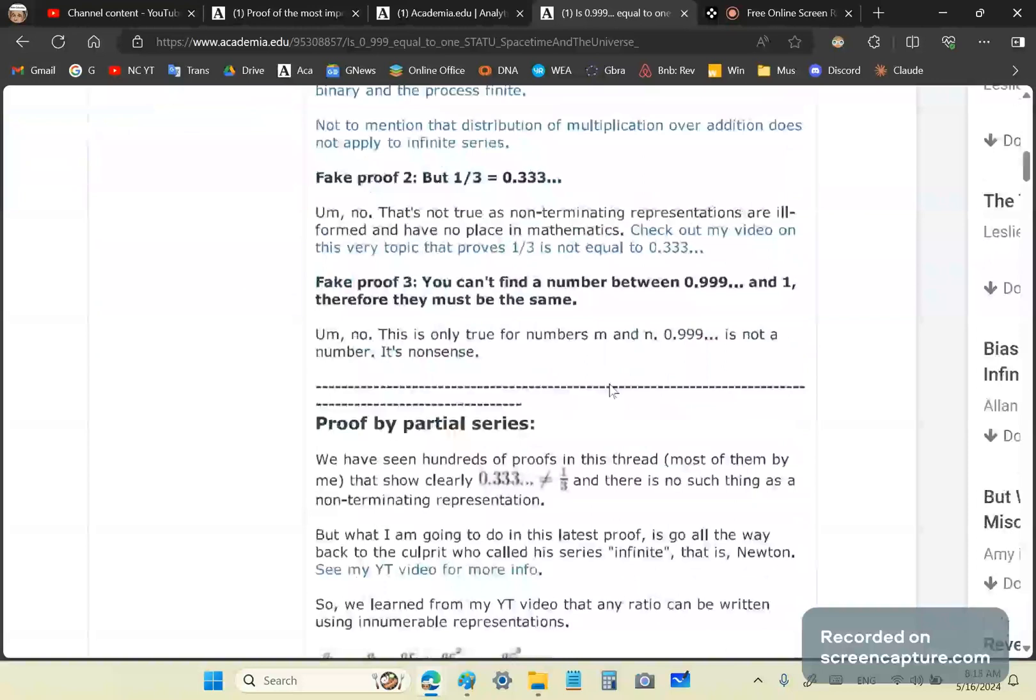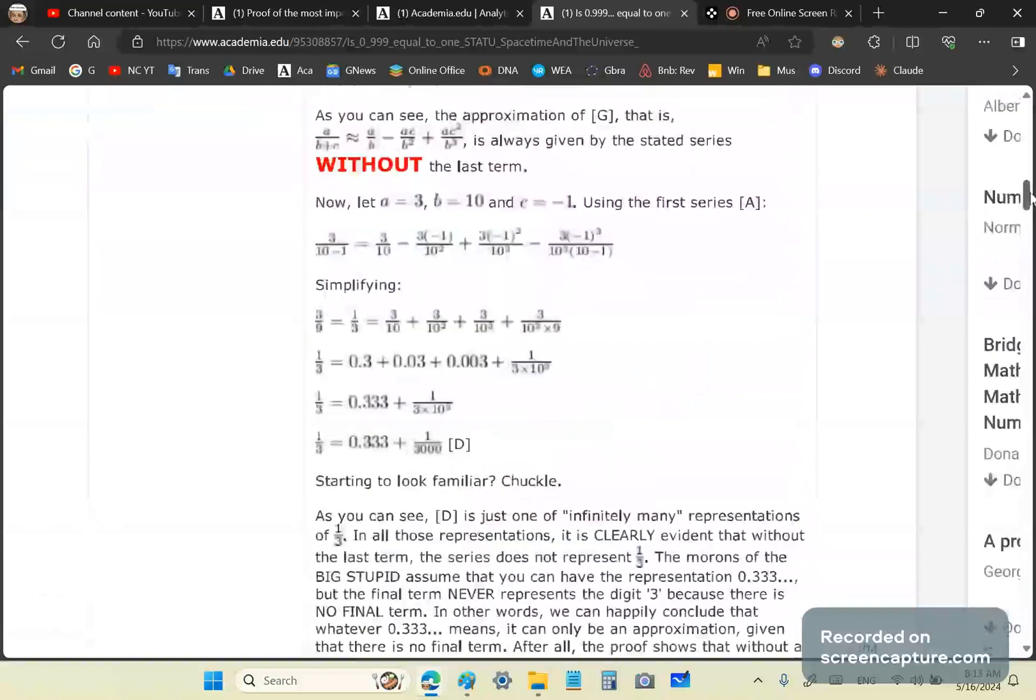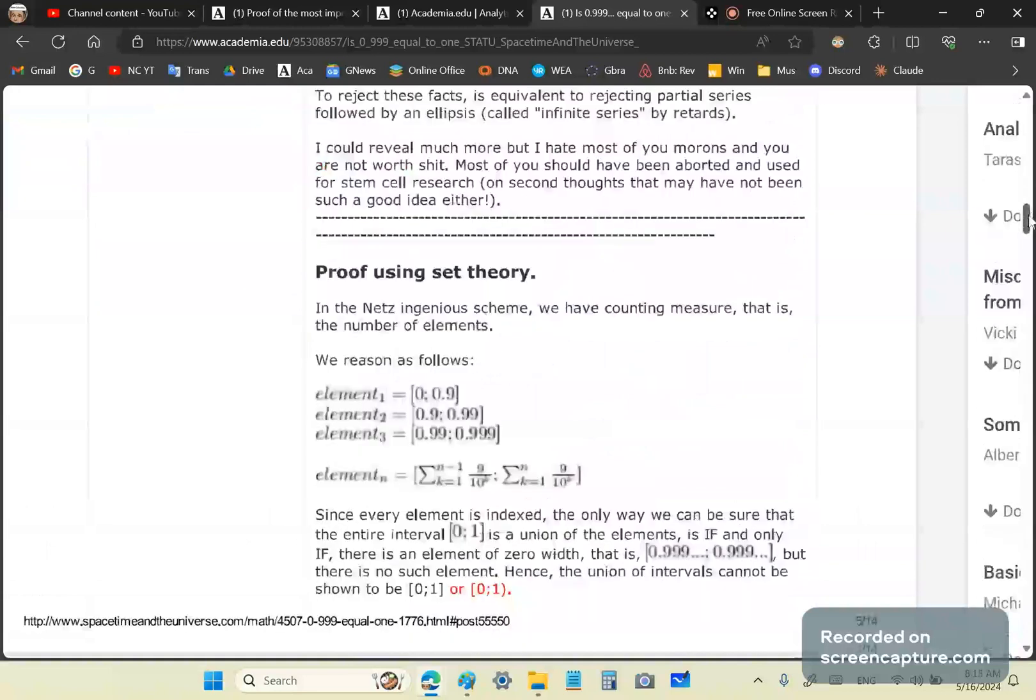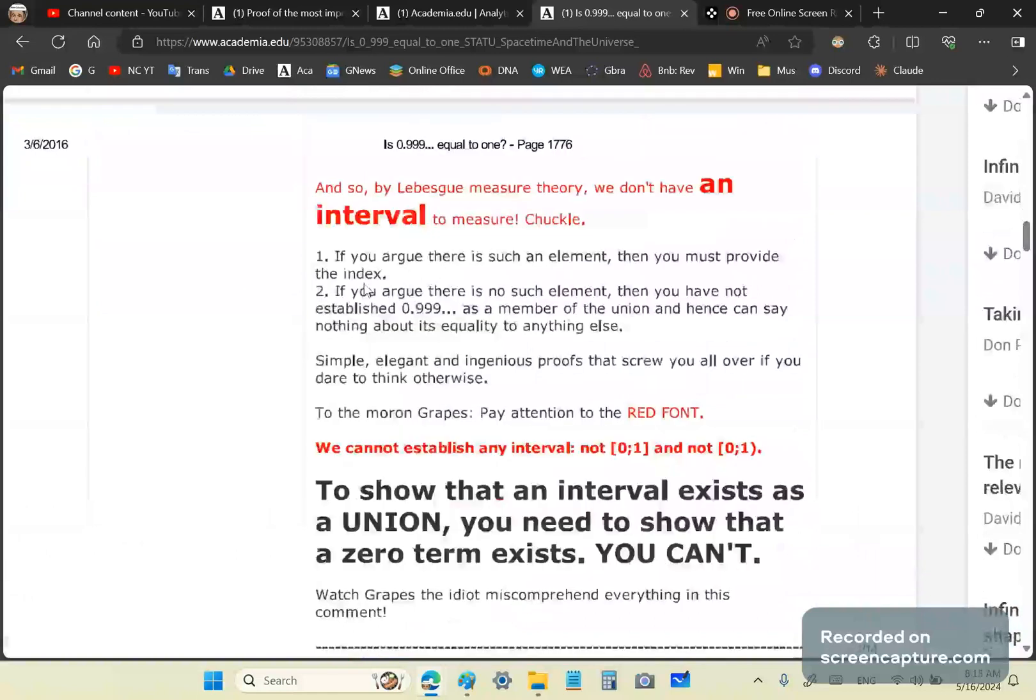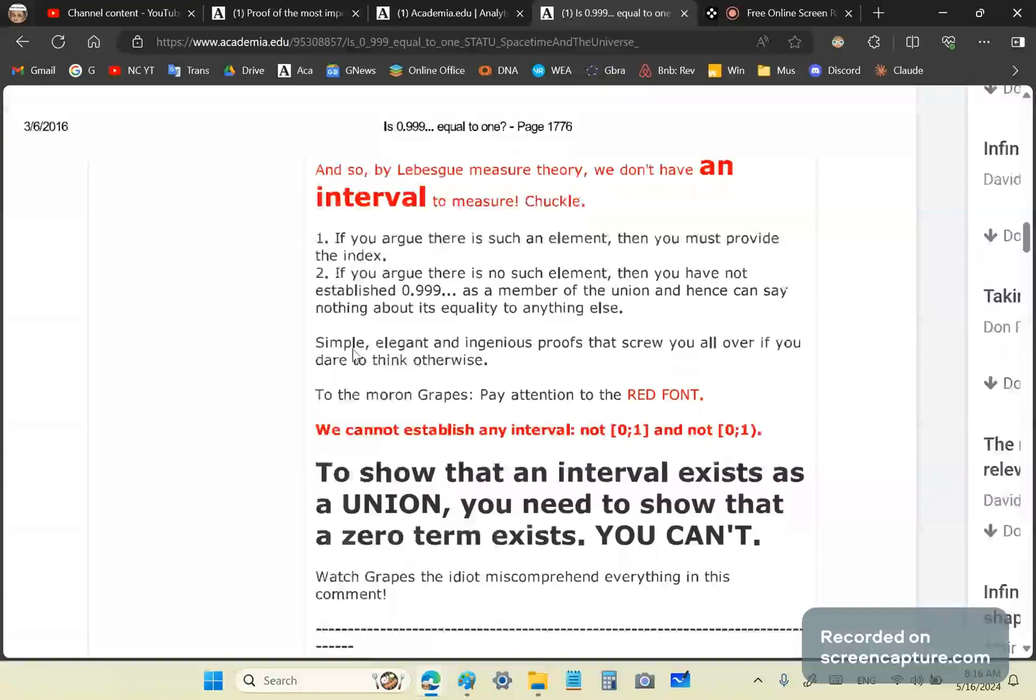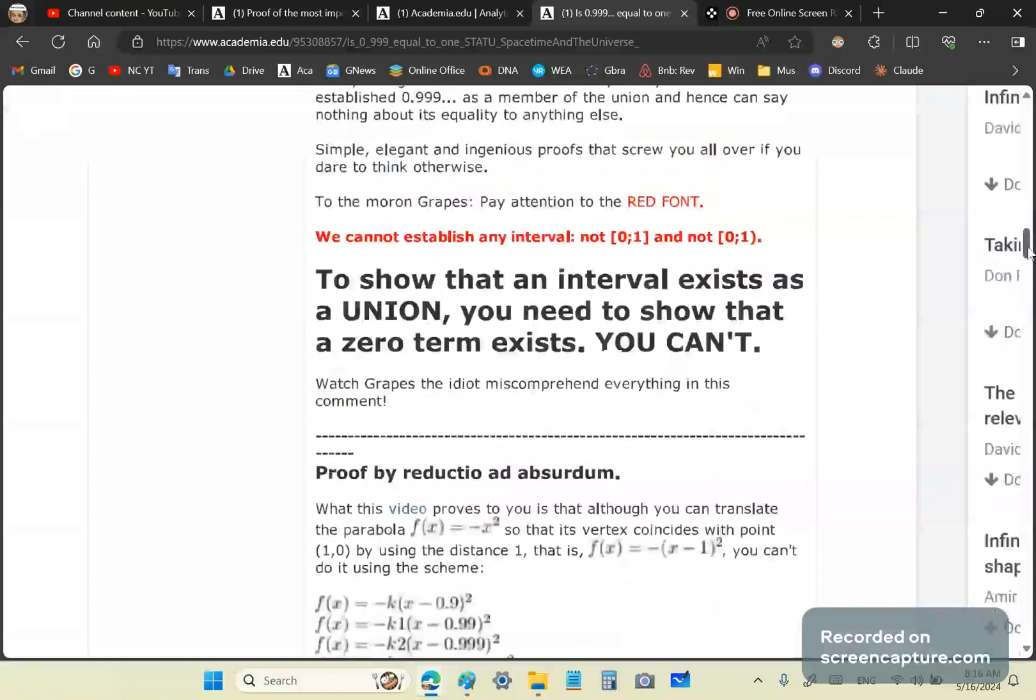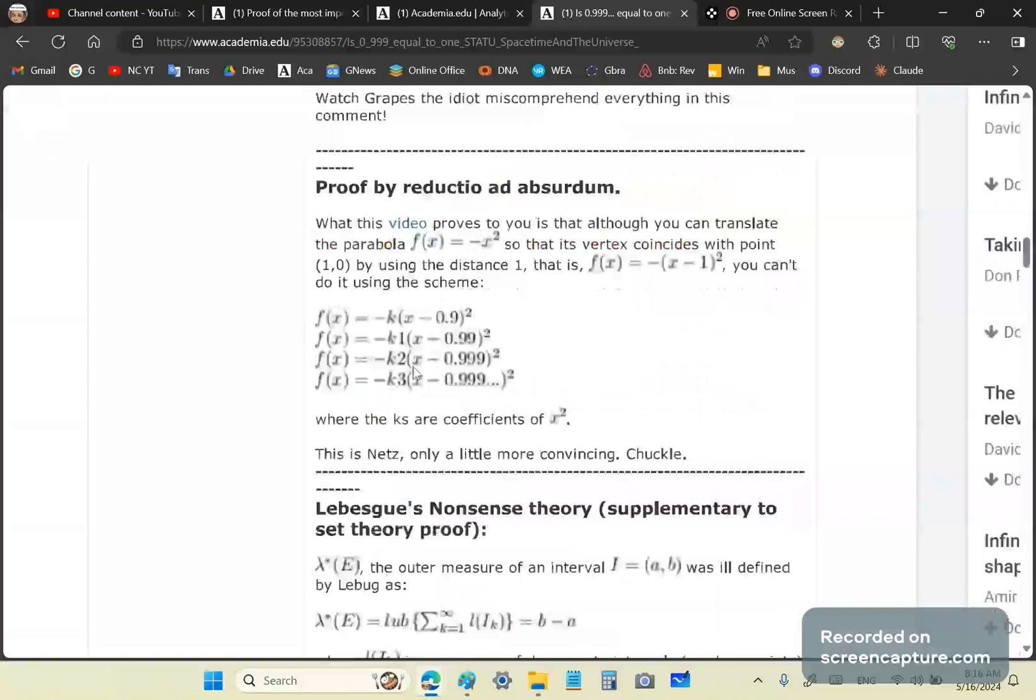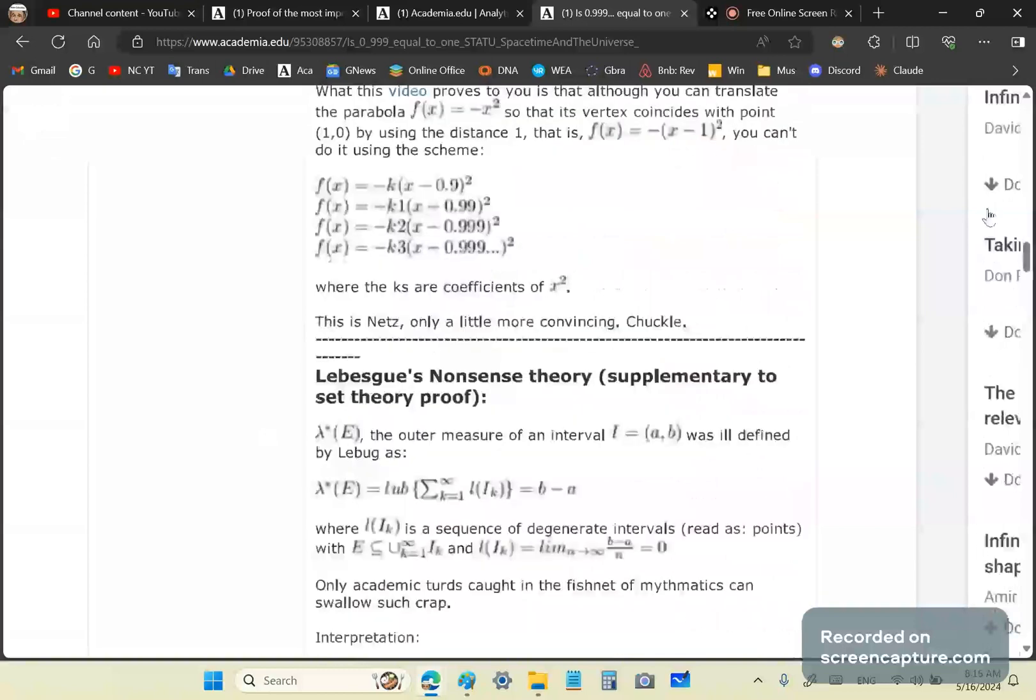This is important to bring up because this comes in at every point. And here I show you many, many proofs in this article. Proof by partial series. Proof by set theory, which I don't agree with. I don't believe set theory is valid, but you can prove it using set theory. And this wasn't my proof. It was somebody else's. And also, proof by showing that it's weaved its way into bullshit like Lebesgue measure, Lebesgue measure theory, which is just the most absurd crap you can ever come across. I mean, Lebesgue was just an insignificant French moron who didn't know what the hell he was doing. So, to show that an interval exists as a union, you need to show that a zero term exists. You can't. Anyway, there's another one here. This is my proof by reductio ad absurdum. Study it. You can even pull up a computer algebra system and try it.